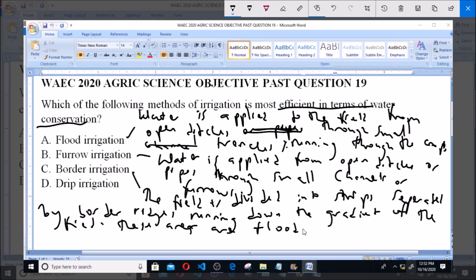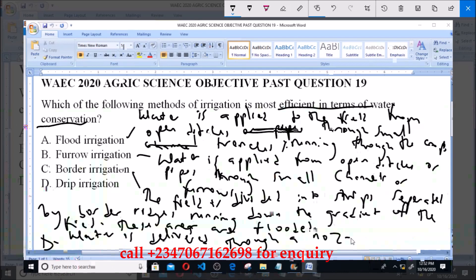And last, option D, drip irrigation. The water is delivered through a nozzle at intervals to the roots of the plant.